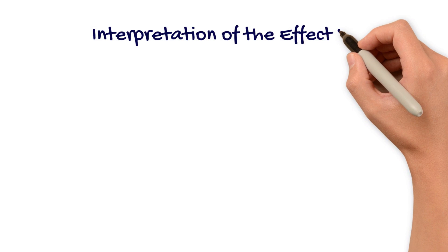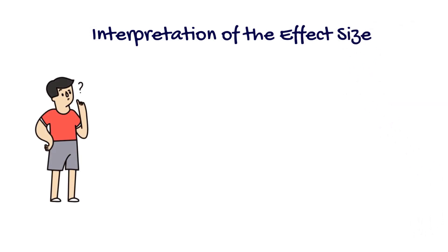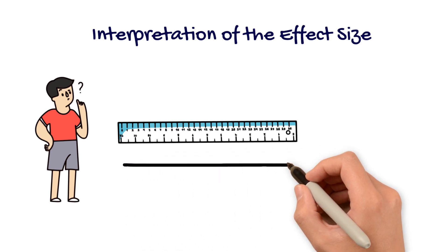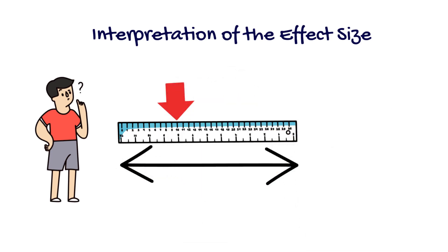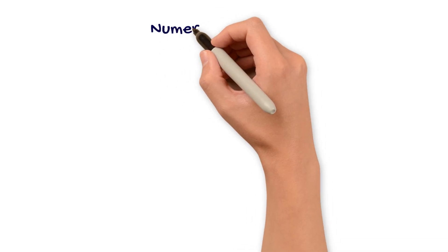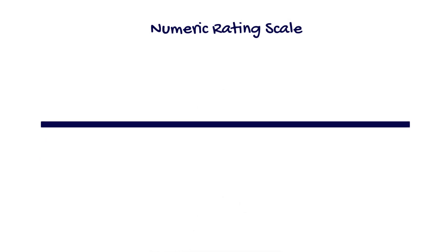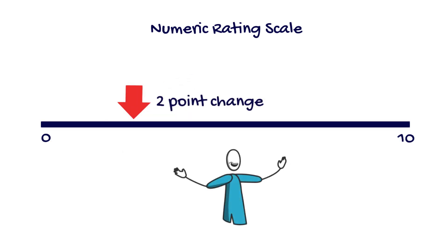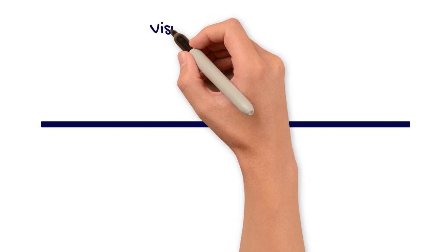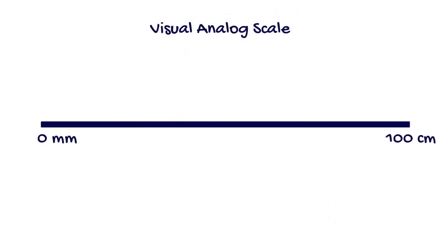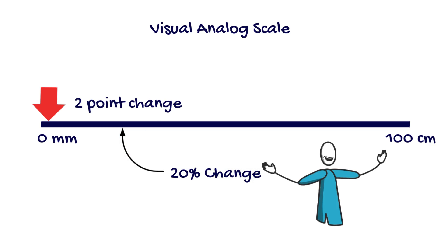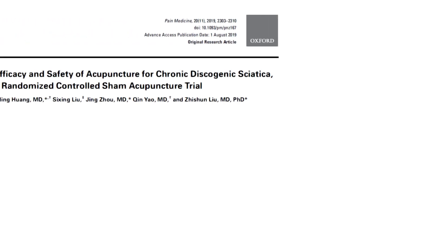The effect estimate should always be interpreted clinically. You can ask yourself, is this change likely to be meaningful to the patient? To answer this question, we need to consider what the outcome is, the scale range, and some minimum threshold that we might consider to be clinically meaningful to patients. For example, if we're looking at a pain scale ranging from 0 to 10, we might consider a two-point change to be clinically meaningful. On the other hand, if we are looking at a pain scale ranging from 0 to 100, two points is likely not meaningful to patients. As a general rule of thumb, a 20% change can be used to guide your judgment.